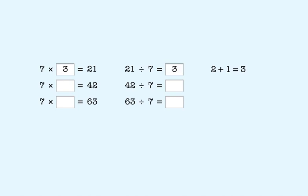The sum of the digits in 42 is 6, so the missing factor is 6. Which means 42 divided by 7 is 6.